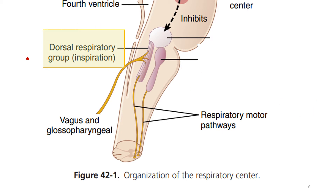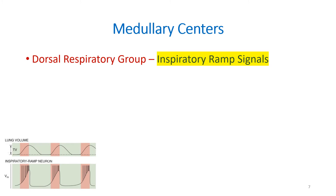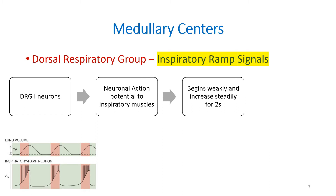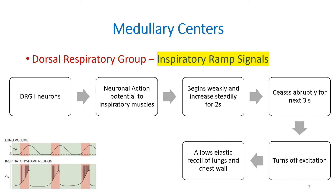An important function of the dorsal respiratory group is that they produce inspiratory ramp signals. The inspiratory neurons in the dorsal respiratory group send an action potential to the inspiratory muscles. This action potential begins weakly and steadily increases for 2 seconds, and after that it ceases abruptly for the next 3 seconds. This turns off the excitation, causing elastic recoil of the lungs and chest wall, resulting in expiration. So the action potential is produced only for inspiration, and expiration is a passive process occurring due to the turn-off of excitation.